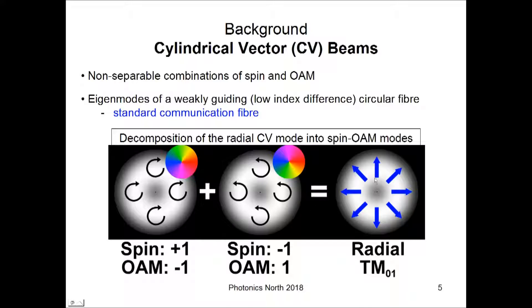And if you add these together, you get the radial mode. If you were to subtract them, then you would get the azimuthal mode. And if you were to use modes with the spin and OAM aligned instead of anti-aligned, as these ones are, you would get the two hybrid modes.